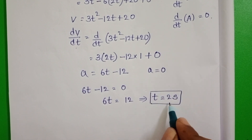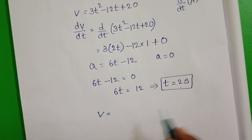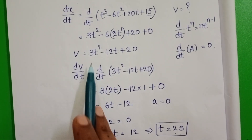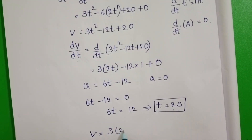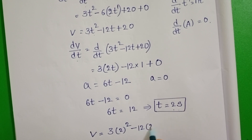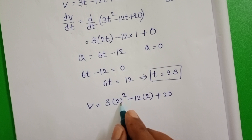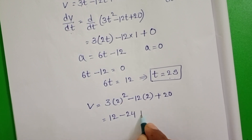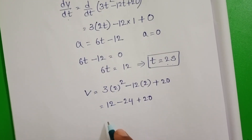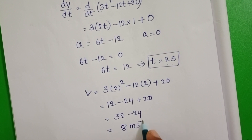Substitute t equals 2 seconds into the velocity equation. V equals 3 times 2 squared minus 12 times 2 plus 20. That is 3 times 4 equals 12, minus 24, plus 20. So 12 plus 20 equals 32, and 32 minus 24 equals 8. The velocity is 8 meters per second.